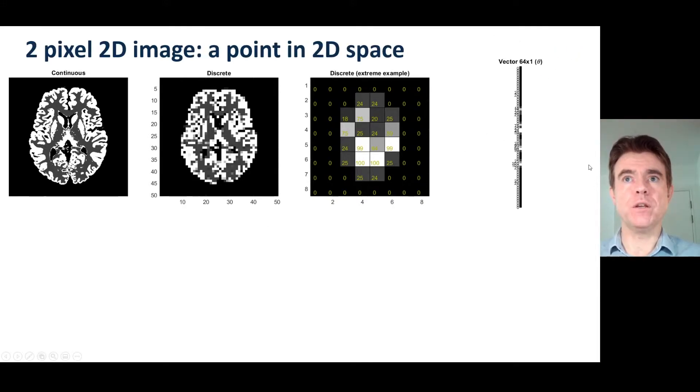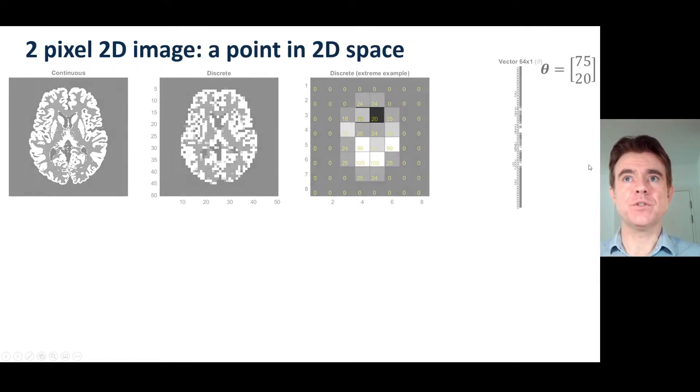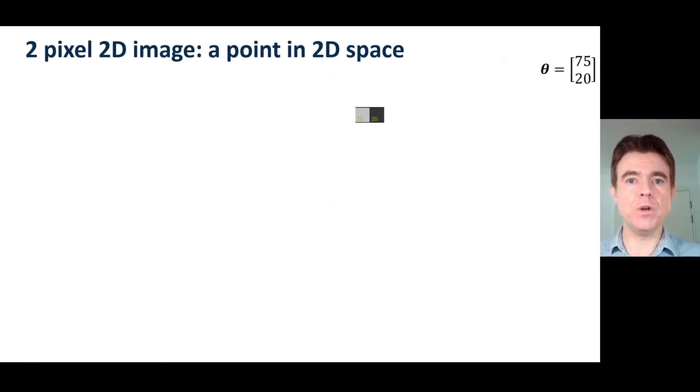So first of all then let's shrink it down to considering just 2 pixels only in that image. So here I've got a value of 75 in that pixel and a value or an amplitude or a coefficient of 20 in that second pixel. So now my vector theta just contains 2 elements, just those 2 values 75 and 20.